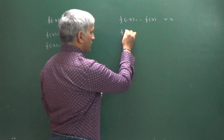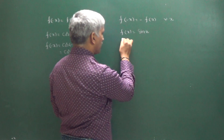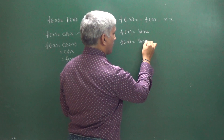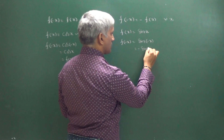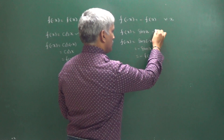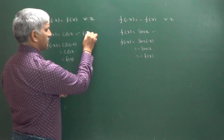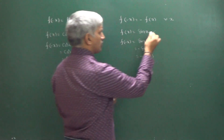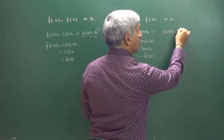At the same time, take another example: f of x is equal to sin x. Find f of minus x. f of minus x is equal to sin of minus x. You know sin of minus theta equals minus sin theta, that is equal to minus f of x. Therefore, we can say this function is an odd function. Similarly, f of x equal to x squared is an even function, and f of x equal to x cubed is an odd function.